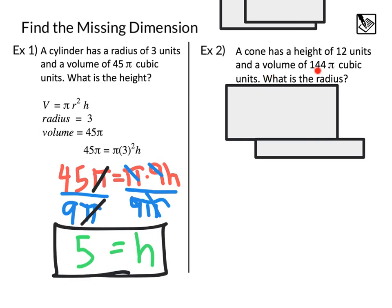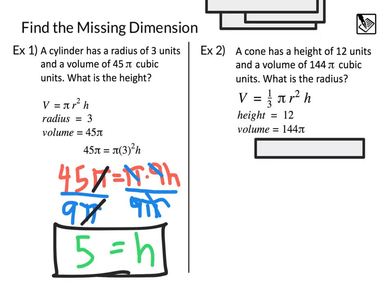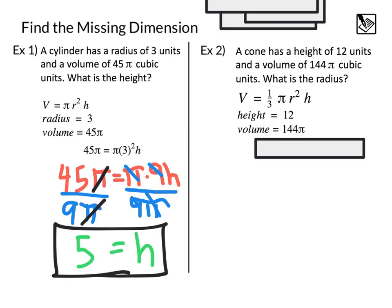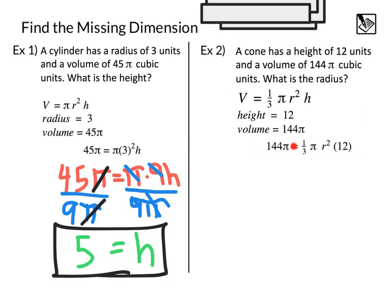Example 2, a cone has a height of 12 units and a volume of 144 pi cubic units. What is the radius? We know the formula for a cone is one-third pi r squared h. We know the height is 12 and the volume is 144. Substituting in the volume and the height, we end up with this equation: 144 pi equals one-third pi times r squared times h, which is 12. I'm going to simplify this equation out. That gives me 144 pi equals 4 pi r squared. I did one-third times 12 to get the 4.